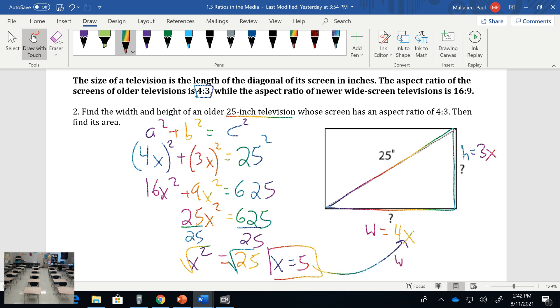If x is 5, then that would be 4 times 5 or 20 for the width, and this height would be 3 times 5 which is 15. So it's a 25 inch TV, but your width is 20 and your height is 15.